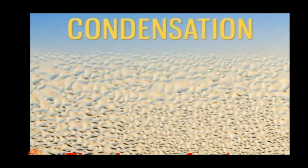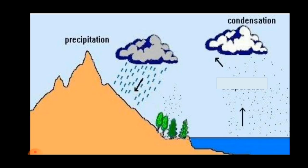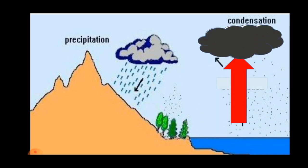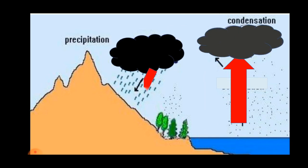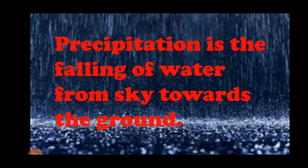As you know, the change of water vapor into water on cooling is called condensation, and due to condensation, clouds are formed. When the clouds get heavy and cannot hold water anymore, condensed water falls down on the earth's surface in different forms such as rain, snow, dew, frost, etc. So, precipitation is the falling of water from the sky towards the ground.